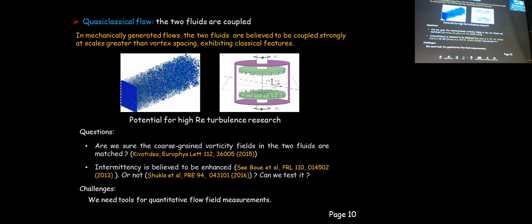Another type of flow is the so-called quasi-classical flow. If one generates turbulent flow by mechanical means — for instance, pulling a grid through superfluid helium or using rotating objects — accumulating evidence suggests that the two fluids can get strongly coupled and behave pretty much like a single fluid, with viscosity coming from the normal fluid and some mutual friction damping at small scales. This is why we call it quasi-classical flow, and it could be useful for classical turbulence research because the kinematic viscosity of helium-2 is so small that one can generate very high Reynolds number flows.